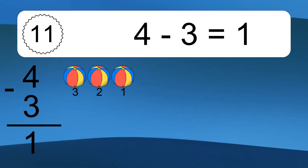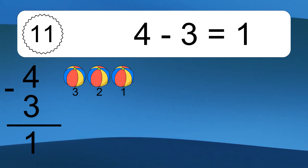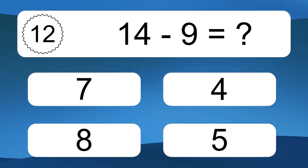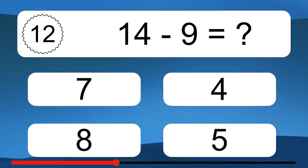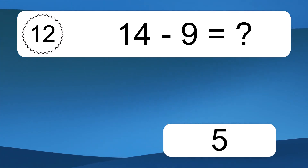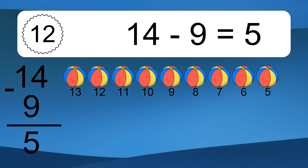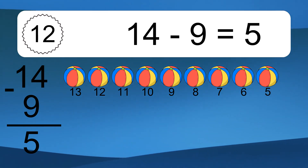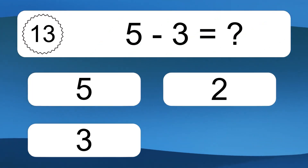14 minus 9 equals what? 14 minus 9 equals 5. Let's count it. 13, 12, 11, 10, 9, 8, 7, 6, 5.